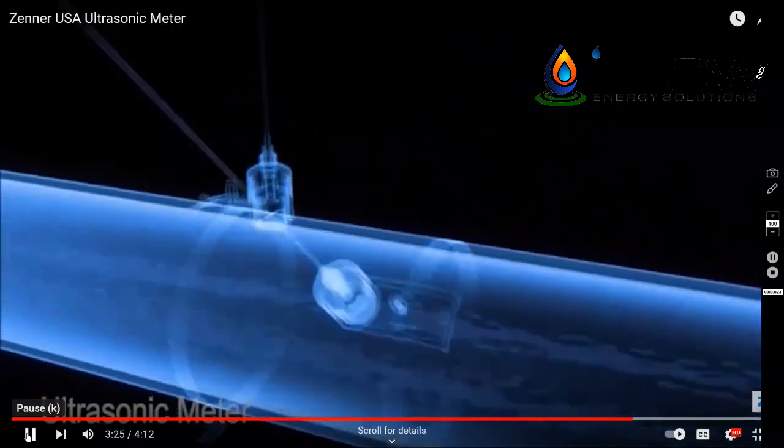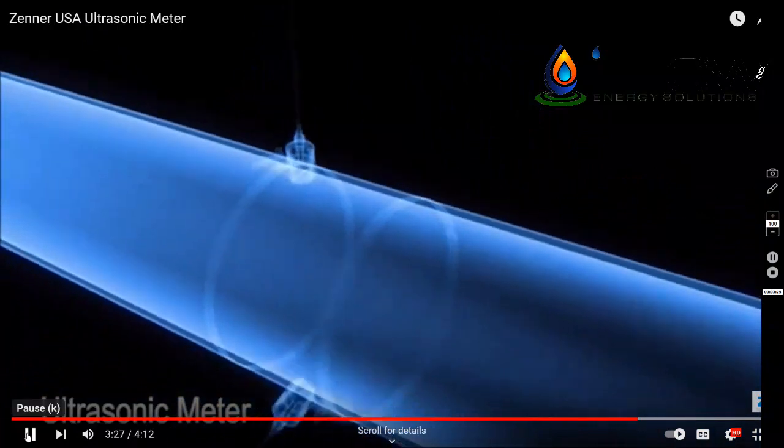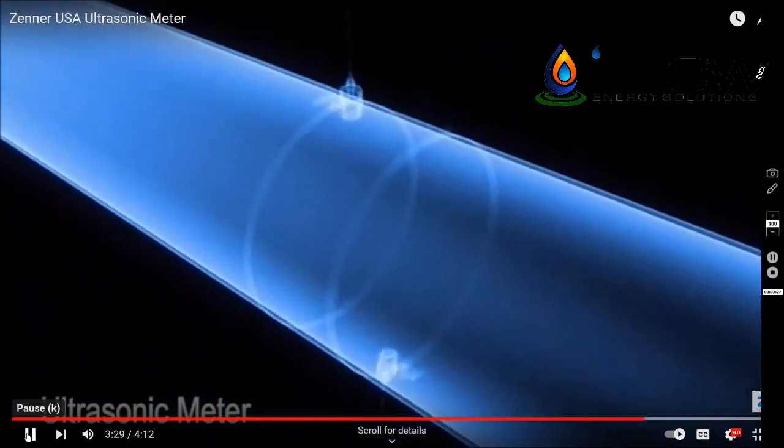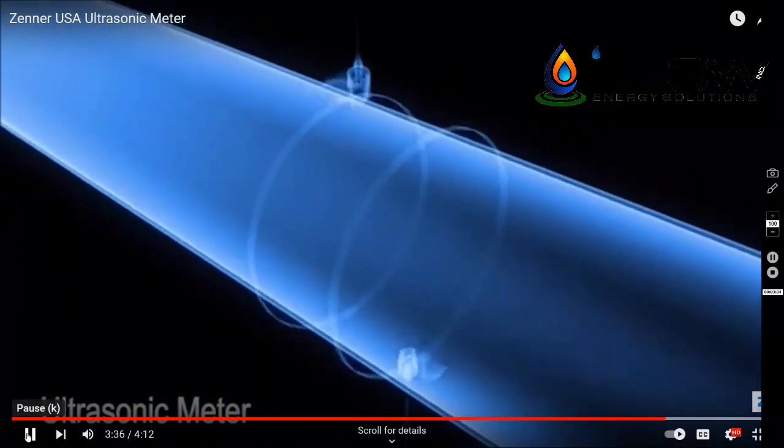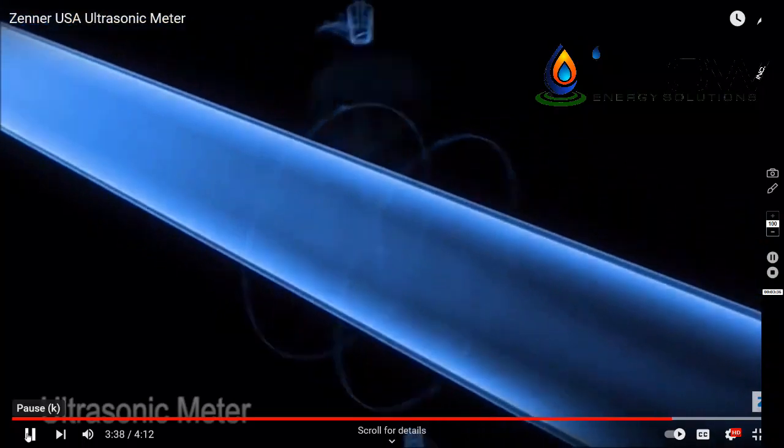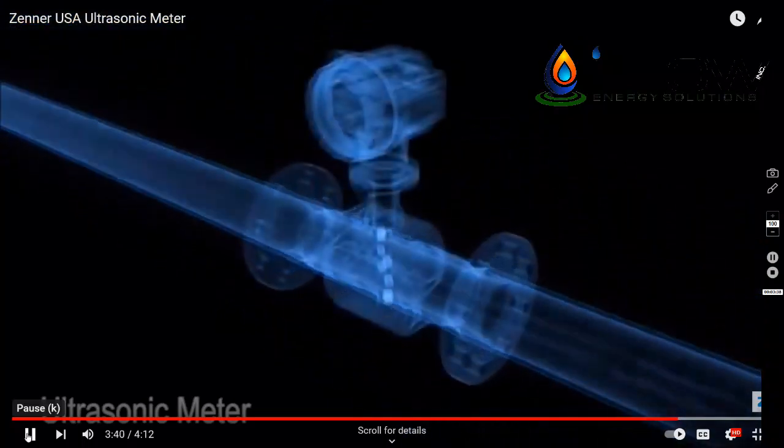The clamp-on design is unique, because flow rates can be measured in very large pipes, up to four meters in diameter. This possibility increases the areas of application, for example, in the water and hydroelectric industries.